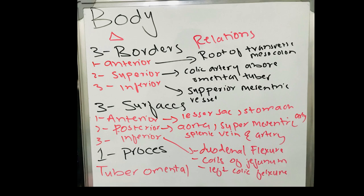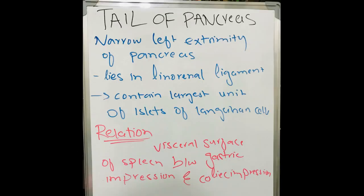One process of the body is called the tuberoomental process. The last part of the pancreas is the tail, which is the narrow left extremity of the pancreas. It lies in the lienorenal ligament and contains the largest number of islets of Langerhans cells. The tail lies between the gastric impression and the colic impression on the visceral surface of the spleen.